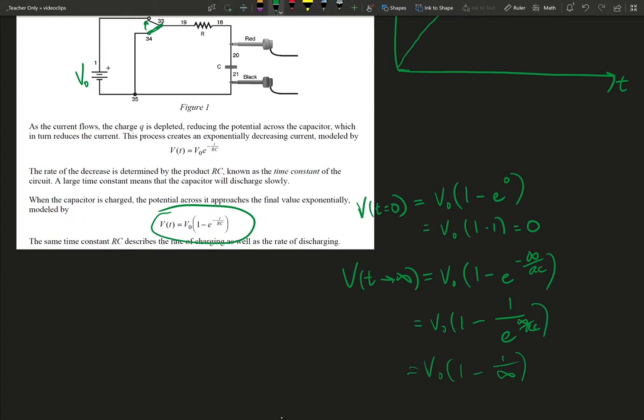And 1 divided by that really big number is going to be a really tiny number. So as time goes to infinity, we really get V0 times 1 minus a tiny number, which might as well be 1 minus 0. And again, if we can't measure it in the engineering and physical measurement world, it may as well be 0. So we really just get V0.